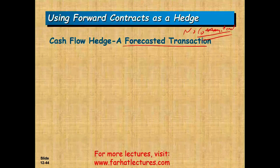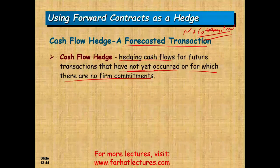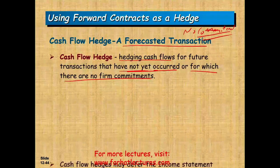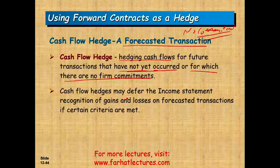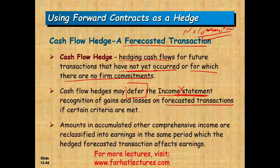What do we need to know about this cash flow hedge? We are going to be paying or receiving for future transactions that have not yet occurred, or for which there is no firm commitment. How does cash flow differ from fair value? The income statement is not involved. We are going to defer gains and losses from the income statement when the transaction is forecasted.